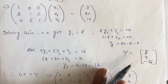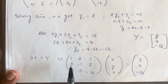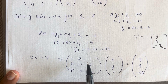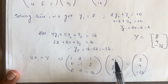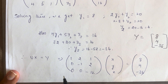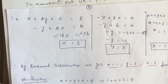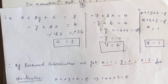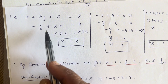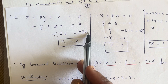Now we go to UX = Y. U is the upper triangular matrix [1, 2, 1; 0, -1, 2; 0, 0, -12], X is [x; y; z], and Y = [8; 4; -36]. By matrix multiplication, we get the equations: x + 2y + z = 8, -y + 2z = 4, and -12z = -36.